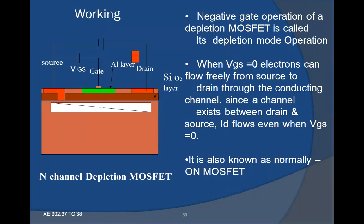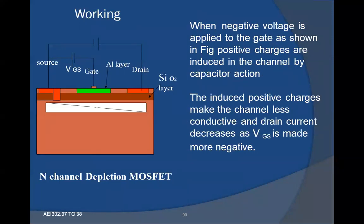In the operation of a depletion MOSFET, when VGS equals zero, electrons flow freely from source to drain through the conducting channel since the channel already exists between drain and source. Hence it is called a normally-on MOSFET. When a negative voltage is applied to the gate, positive charges are induced in the channel by capacitor action. The induced positive charges make the channel less conductive and drain current decreases as VGS is made more negative.